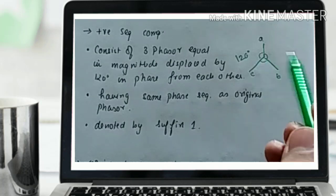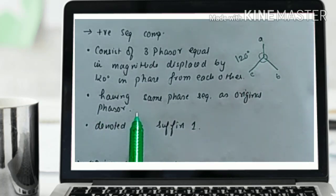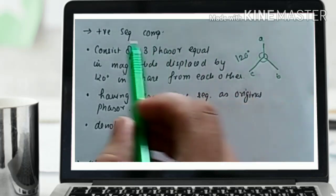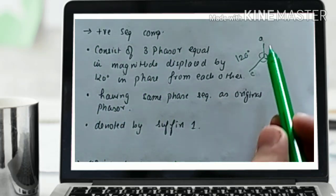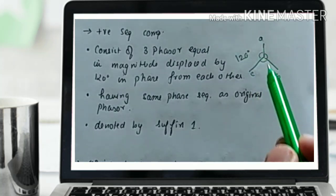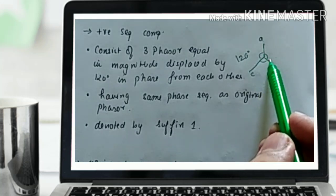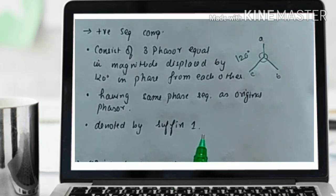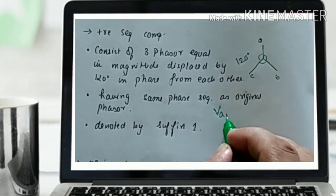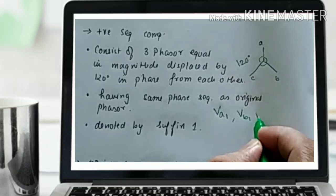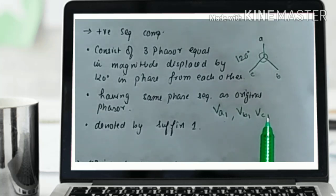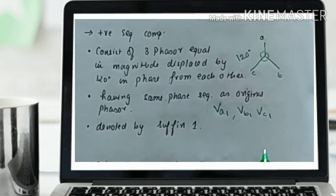We can also say that the positive sequence component has the same phase sequence as the original phasor. The phasor of A, B, C of the original sequence will be the same for the positive sequence component. It is denoted by suffix 1, meaning for three phases we write Va1, Vb1, and Vc1.